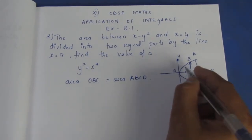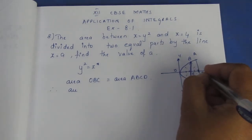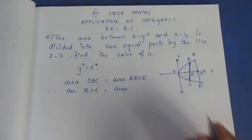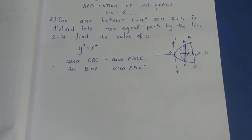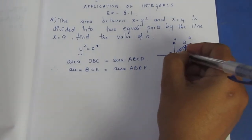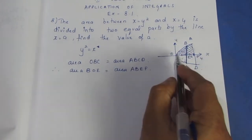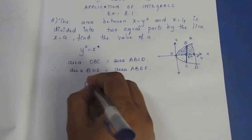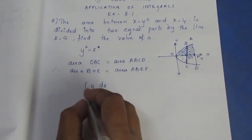If we have two equal areas, we will split them. Therefore, area BOE is equal to half of area ABEF. This area corresponds to limits 0 to a, and this area corresponds to limits a to 4, on the x-axis.